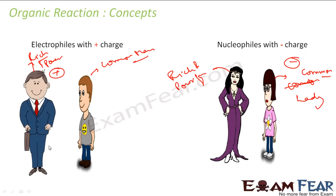So, given between these two: the rich guy is more powerful, the common man is less powerful, the rich lady is more powerful, and the common lady is less powerful. This is the dummy analogy we use to explain the concepts of organic reaction.